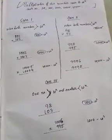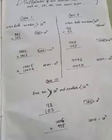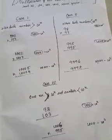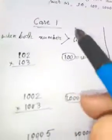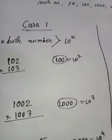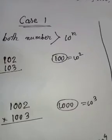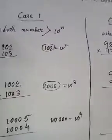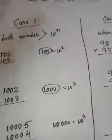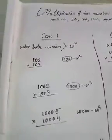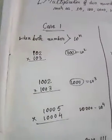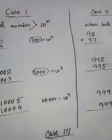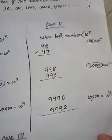This will have three cases. Here is case number one. If both numbers are greater than 10 to the power n, we choose the better situation.